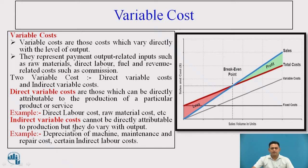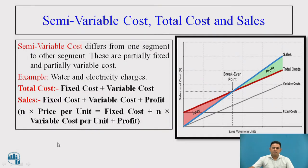Indirect variable costs cannot be directly related to production, but they are needed to obtain the finished or end product. Semi-variable costs differ from one segment to another; they are partly fixed and partly variable — for example, water and electricity charges, which are sometimes partly fixed and partly variable. So finally, total cost is equal to fixed cost plus variable cost, and sales is equal to fixed cost plus variable cost plus profit.